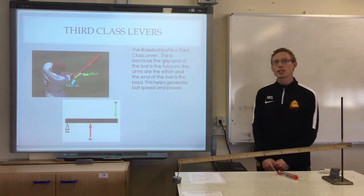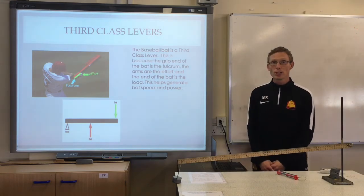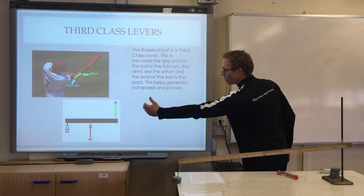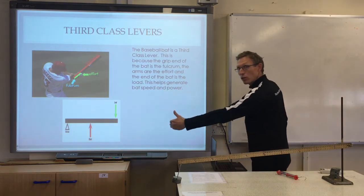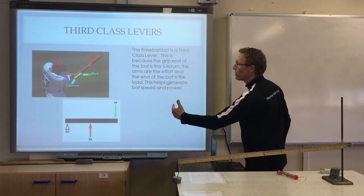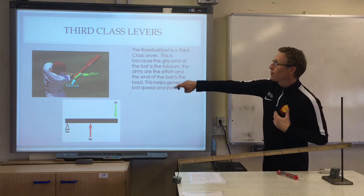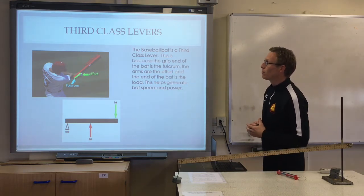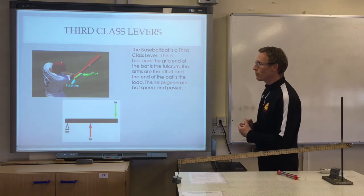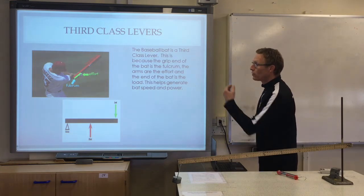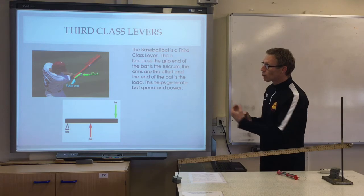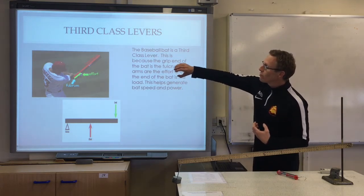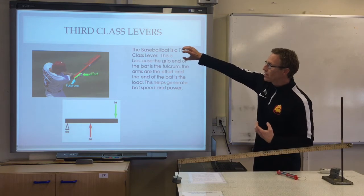The last one is third class levers. We have lots of these in our body and they are set up like this: the fulcrum at one end, the effort in the middle and the load at the far end. In the picture I've given, that's a baseball bat as a lever. The batter is the effort — his muscles swinging the bat — the fulcrum is the grip end of the bat and the load is the rest of the bat, particularly the end where it's hitting the ball.